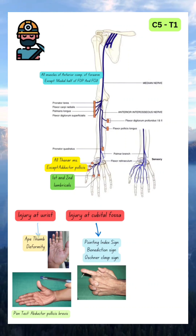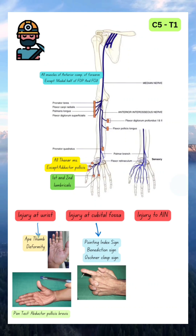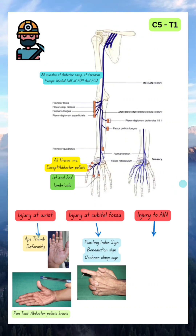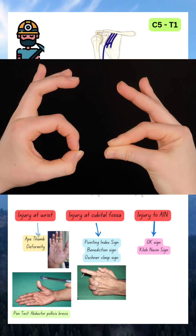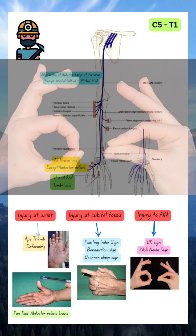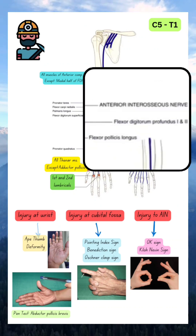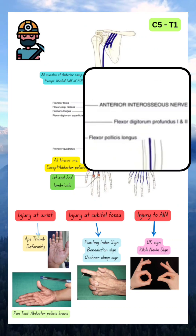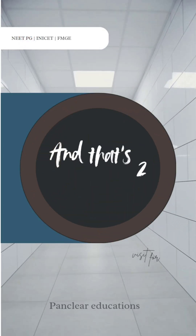Suppose injury is only to the anterior interosseous nerve. The patient is not able to make a perfect round 'O' sign with the thumb and index finger. Instead, the posture will show flattening due to weakness of flexor digitorum profundus for the lateral half and flexor pollicis longus.